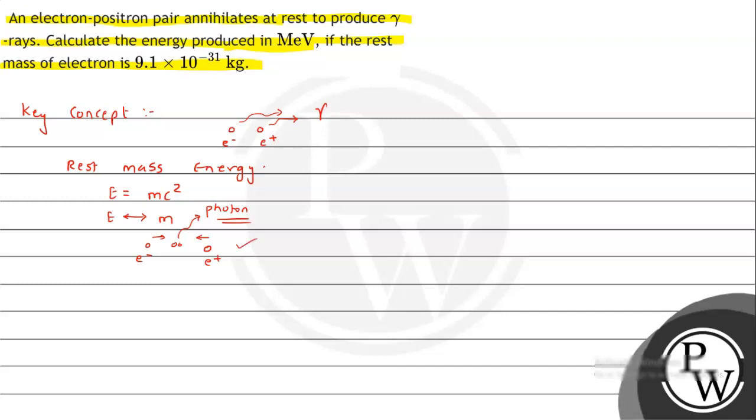So that is the conversion of energy into mass. And here we have seen that conversion of mass into energy. Now what can we write from that? The energy we need to calculate, so E can be written as mass of electron plus mass of positron, total combined mass.